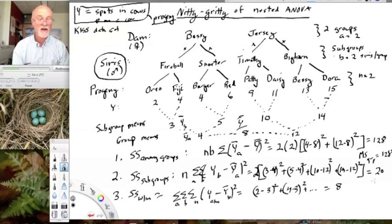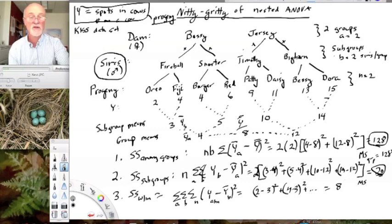The final sums of squares we need to calculate is the within group sums of squares, which is going to be the triple summation across all groups A, subgroups B, and N. These are the deviations from the subgroup means of the observations. So 2 minus 3, 4 minus 3, 4 minus 5, 6 minus 5, 9 minus 10, and so on. They're all deviating by 1, so this is a very nice number. It comes out to be 8.